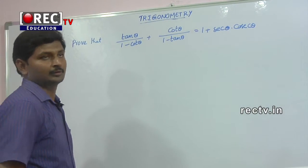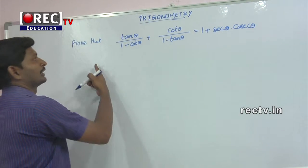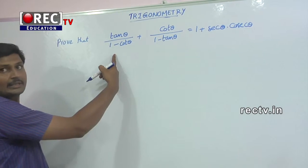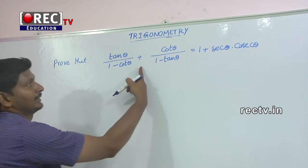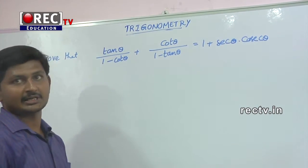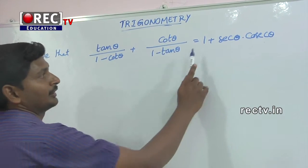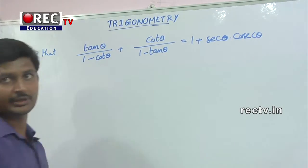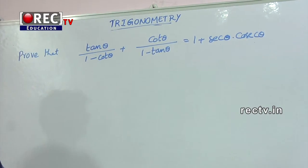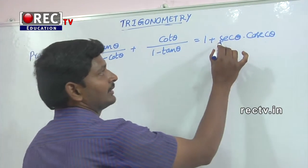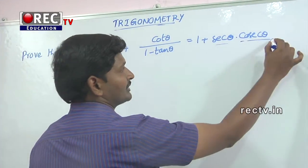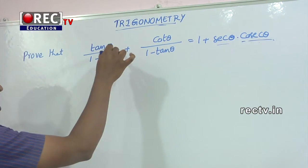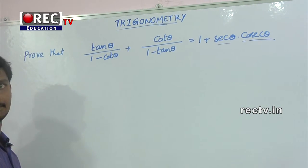Next question: prove that tan θ divided by (1 minus cot θ) plus cot θ divided by (1 minus tan θ) is equal to 1 plus secant θ into cosecant θ. Here the LHS has secant and cosecant, which means we have to convert everything into sine and cos.